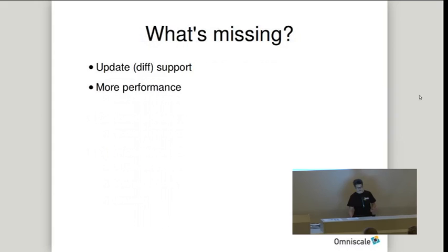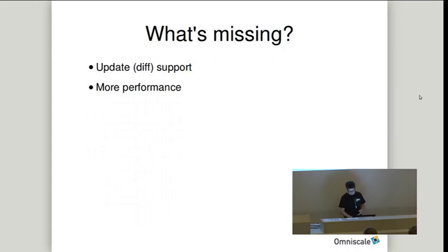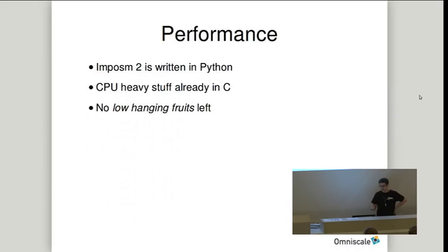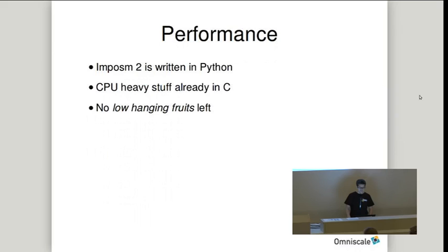What's missing? Impossum 2 does not support updating the database — there's no diff support. And while Impossum 2 is fast, there is still room for improvement. Impossum 2 itself is written in Python. All CPU-heavy stuff is already written in C; we use C libraries like GEOS, and the protobuf parser is written in C. But there were no low-hanging fruits left to improve performance further.